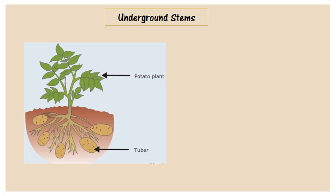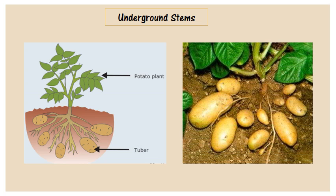Moving to another type of underground stems, which is called tubers. An example of tubers is potato — excellent! We have two examples of underground stems: bulbs and tubers. Example of bulbs is onion; example of tubers is potato.